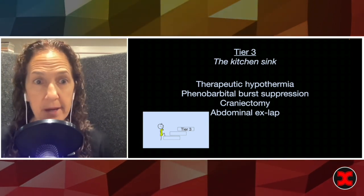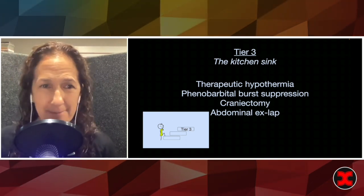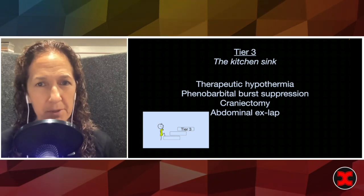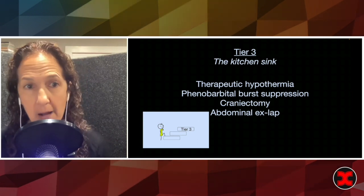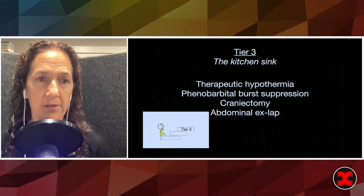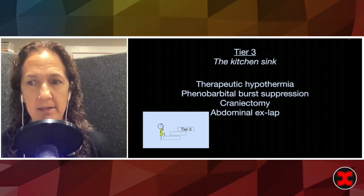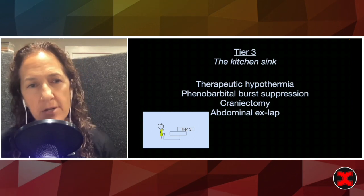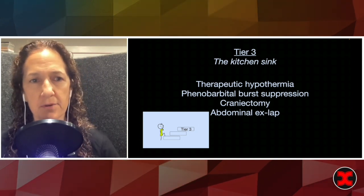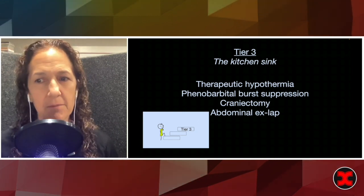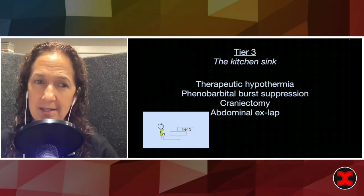So here we are at tier three - it's the kitchen sink. We've talked about therapeutic hypothermia, not so great. What about burst suppression with barbiturate like phenobarbital? That really is an option and it will calm down the tone. But it comes with a price - the price is that you have side effects of decreased GI, decreased cardiac, decreased respiratory, metabolic derangements. It really can be quite challenging to deal with. So burst suppression kitchen sink - if you're trying that, you're really getting toward the end.